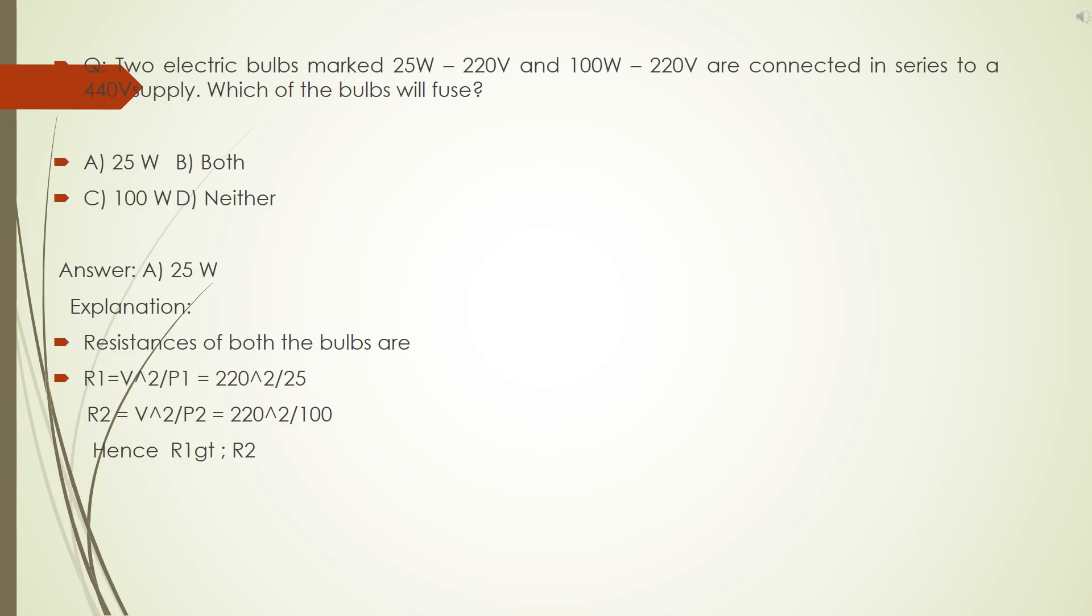Two electric bulbs marked 25W to 220V and 100W to 220V are connected in series to a 440V supply. Which of the bulb will fuse? A, 25W, B, both C, 100W, D neither. The correct answer is A, 25W. Friends, I have explained this here with a solution. When we connected it in a series, the voltage dividing them in the ratio of their resistance. The voltage of 440V divides in such a way that the voltage across 25W bulb will be more than the 220V. Hence, 25W bulb will fuse.